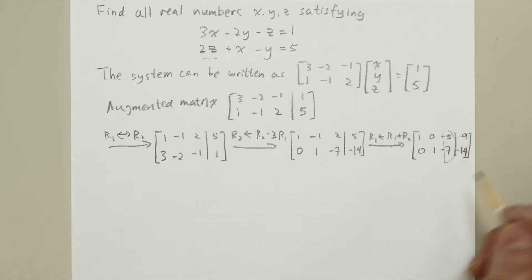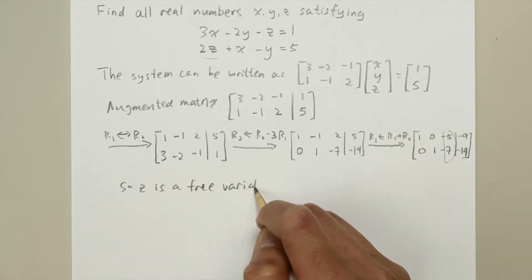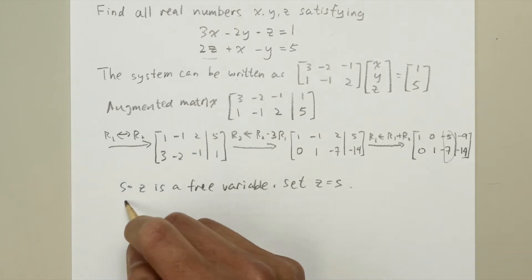Notice that the third column is not a pivot column, so z is a free variable, and we can set it to a parameter, say s.